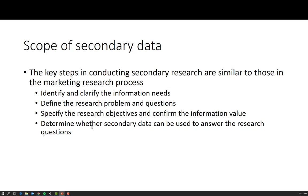The scope of secondary data follows the same process as any other kind of marketing research. We need to identify and clarify the information needs — this is what I got you to do at the end of last week, identifying key areas to look for. You need to define the research problem and questions; we have defined the research problem in general terms so far, but this needs further clarification and we are yet to develop our research questions. You also need to specify the research objectives and confirm the information value: for what purpose are we doing this research? Is it just because we need a quick decision and secondary sources are the quickest available information? Or is there more detail that is required?